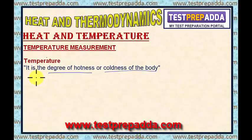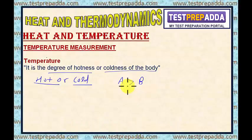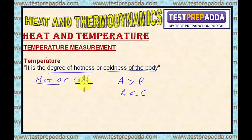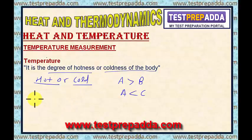But the problem is hot or cold — these are relative terms. Body A can be relatively hot with respect to B, while body A can be relatively cold with respect to body C. So, hot and cold are relative terms. We can experience hotness or coldness, but the problem is how to measure this.